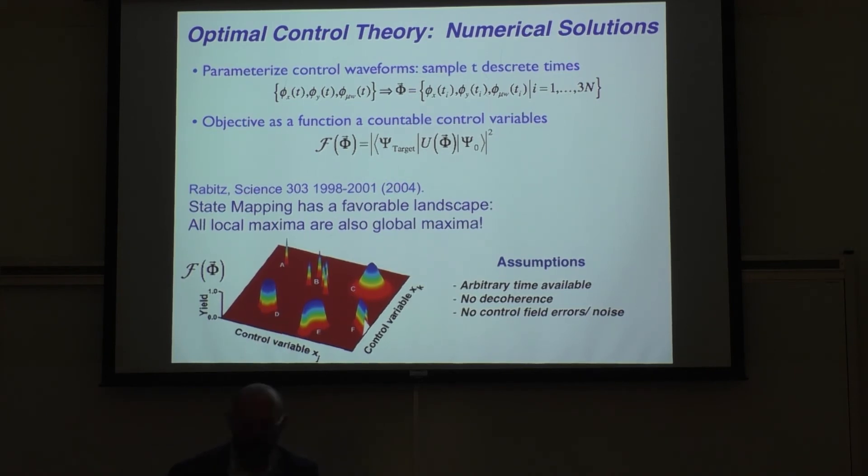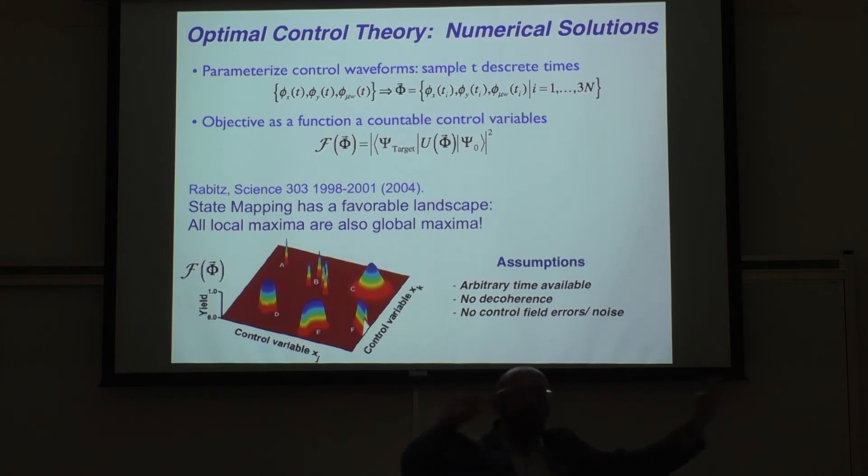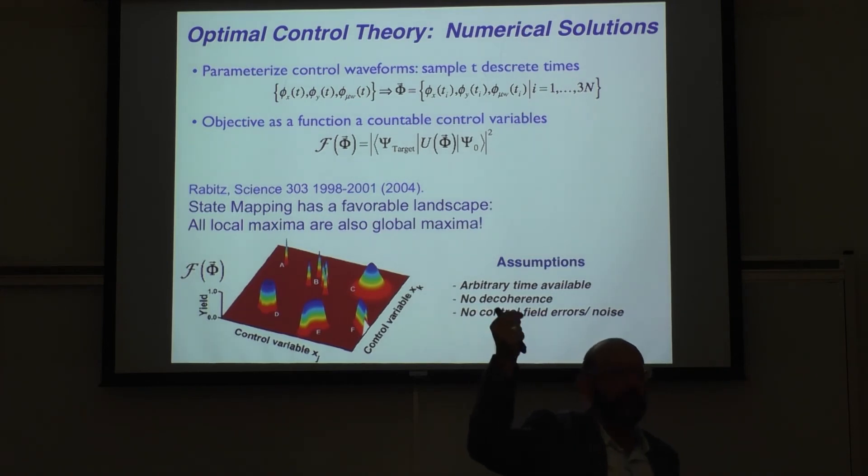Amazingly, there are no traps. There are no false peaks. Every peak is at one. If you start and place a seed, you just have to climb the gradient and you'll get to the peak. It's even better than this. They're all like this. Now, of course, that is based on an idealized world where we have infinite bandwidth, we have no noise, we have no decoherence, we have as much time as we want. In reality, none of these things are true exactly, but they could be approximately true. So we can start with the idealized world and then see which solutions survive best.